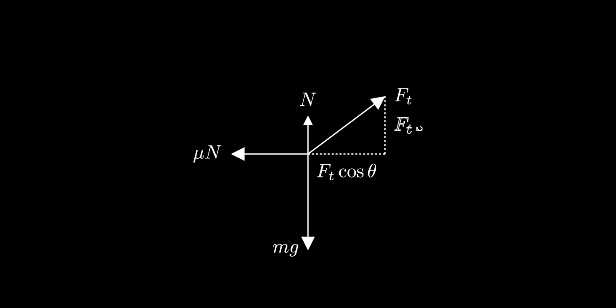Typically, this problem will be solved using a free body diagram. We have the force of tension Ft, the gravitational force mg, the normal force N, and the friction force μN. We can break up the forces into perpendicular components and do a force balance in both directions.